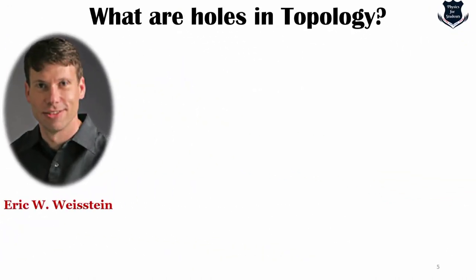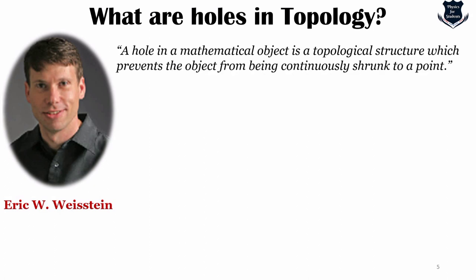Eric Wolfgang Weisstein is an American mathematician and encyclopedist who created and maintains encyclopedias like MathWorld and ScienceWorld. He is the author of the CRC Concise Encyclopedia of Mathematics and works for Wolfram Research. His important contribution is that he defined what are holes. A hole in a mathematical object is a topological structure which prevents the object from being continuously shrunk to a point.